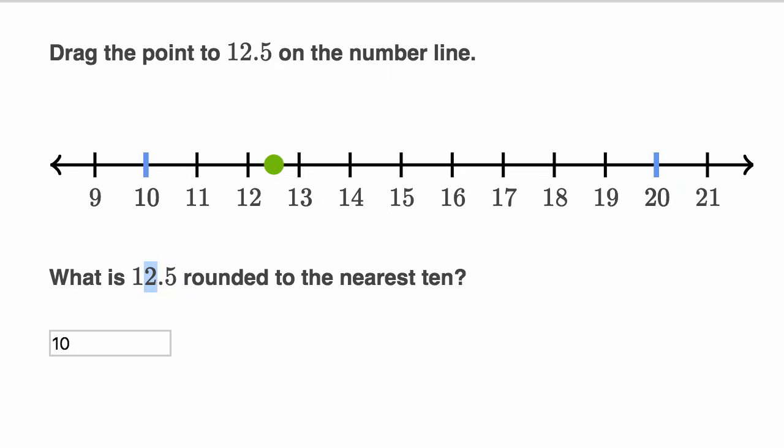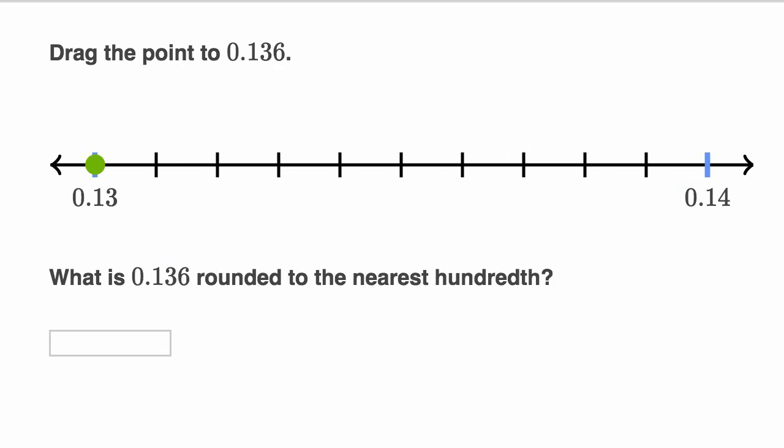Let's do another example here. So here it says drag the point to 0.136. So this is 0.13, this is 0.14. So this is 13 hundredths and this is 14 hundredths. And let's see there's one, two, three, four, five, six, seven, eight, nine, 10. So these are, you could think of it as the 10 thousandths between these two hundredths. So we want to go 13 hundredths and then another 6 thousandths.